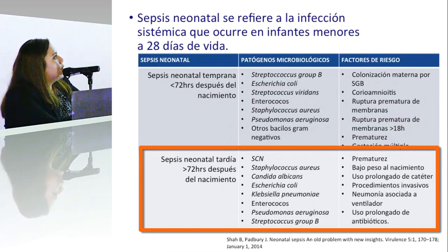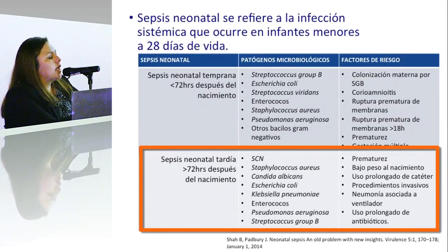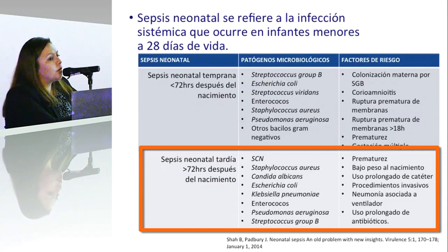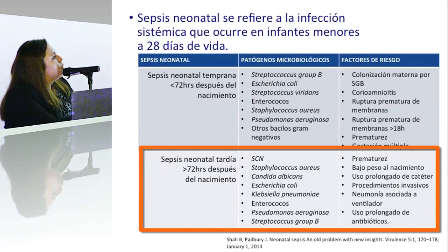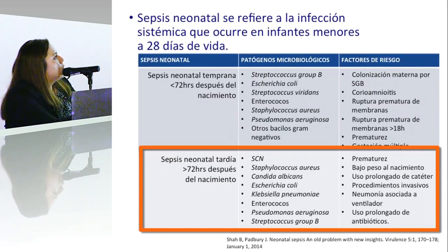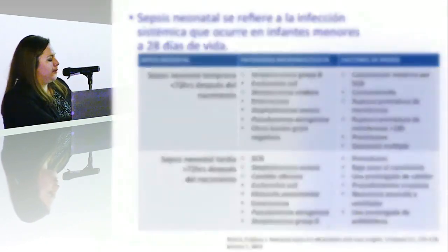También tenemos Staphylococcus aureus en muchas unidades de cuidados intensivos. Cándida también juega un papel importante; incluso se requiere profilaxis para los prematuros de peso muy bajo. Las enterobacterias, pseudomonas y Streptococo del grupo B en último lugar.